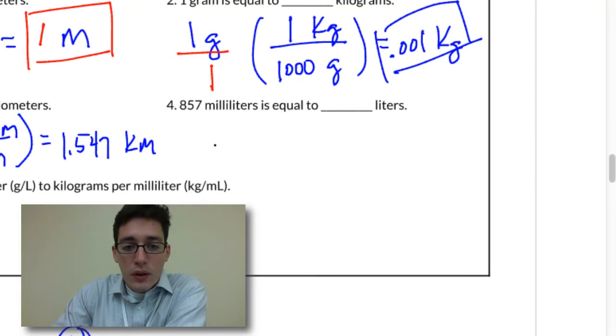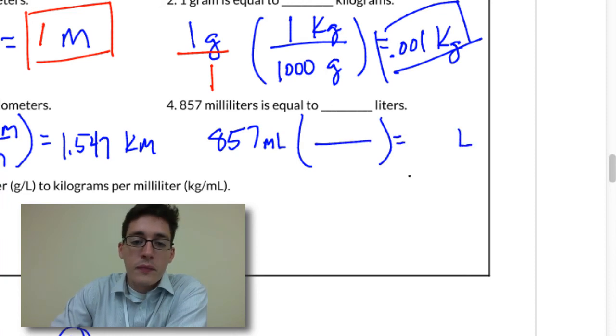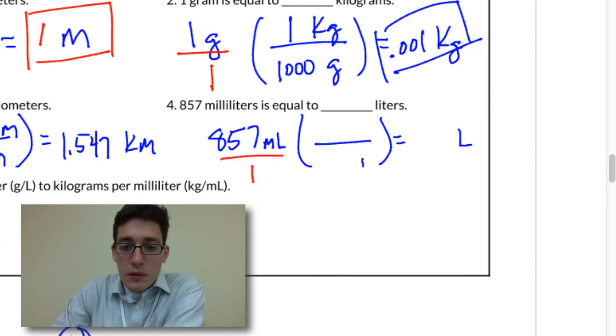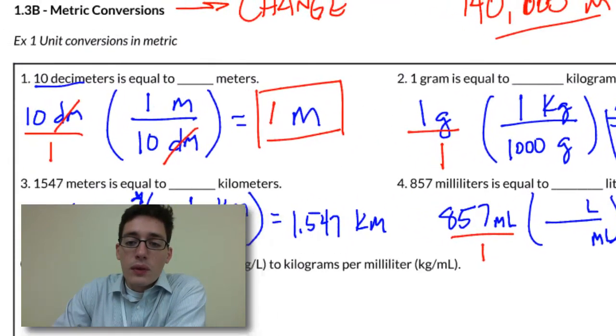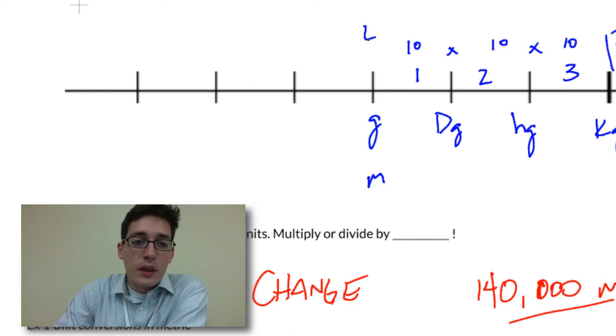And then number four, 857 milliliters, and we want to convert this into liters. And again, just for a visual reference, we're going to put this over one, and I want to change from milliliters, so we're going to cancel it out and change to liters. And if we look up on our number line, if we have liters in the middle, a milli is smaller, and that is we have a deciliter, a centiliter, and then a milliliter. So this is 0.1, 0.01, and 0.001.